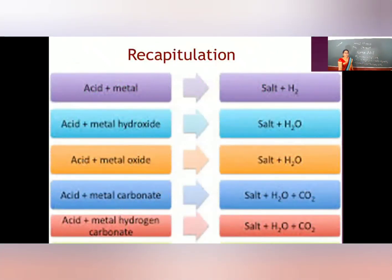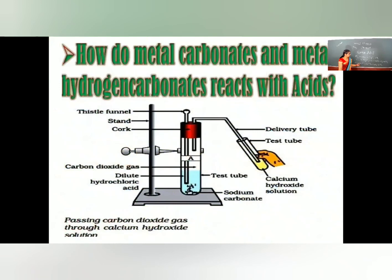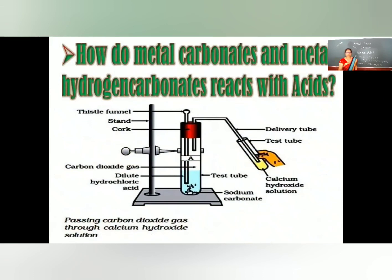In the reaction of acid with metal carbonate, carbon dioxide gas is released. How do we detect that carbon dioxide gas? When we pass that carbon dioxide gas into lime water — that is calcium hydroxide solution — it turns milky due to the formation of calcium carbonate.